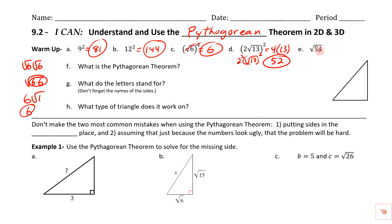And then we've got the square root of 54, which we want to simplify by factoring. 6 goes into 54 nine times, and 9 is 3 times 3. So this is the square root of 3 times 3 times 6. We could break down the 6 to 3 and 2, but there are no pairs there. So this ends up being 3 radical 6 once simplified.